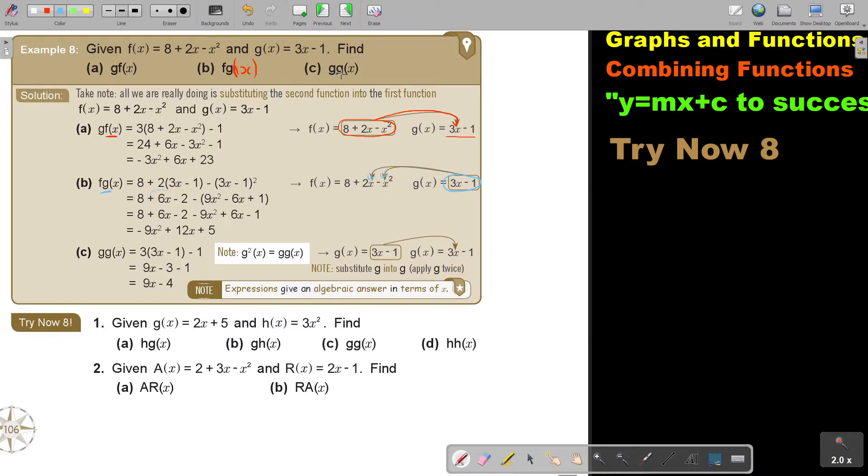Then the final one, gg x. Just rewrite that g function two times, and then take the one and throw it into the other one. But it's actually the same function, and then I get this. Expressions give an algebraic answer in terms of x.